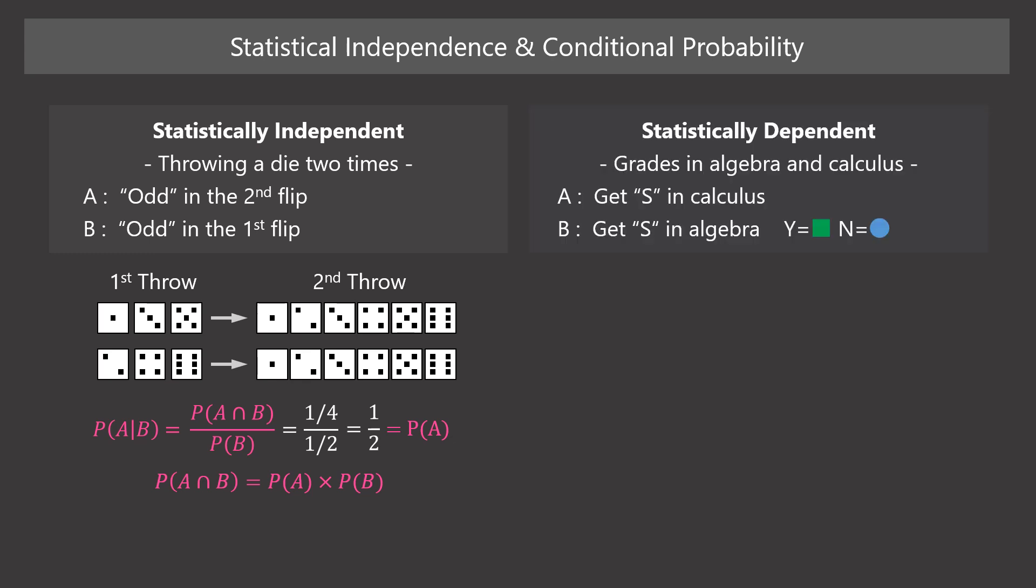Let's look at a statistically dependent example: students' grades in algebra and calculus. Suppose the probability of getting a grade of standard pass is 50% both in algebra and calculus. Let's regard this as conditional probability, where students get standard pass in calculus on the condition that the grade of algebra is standard pass. Here, event A is getting a standard pass in calculus and event B is getting a standard pass in algebra.